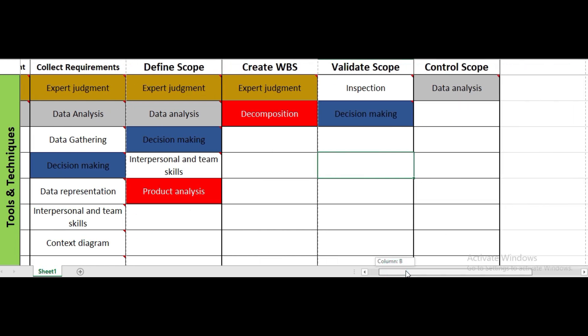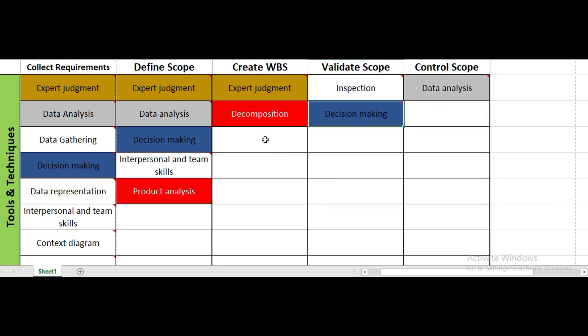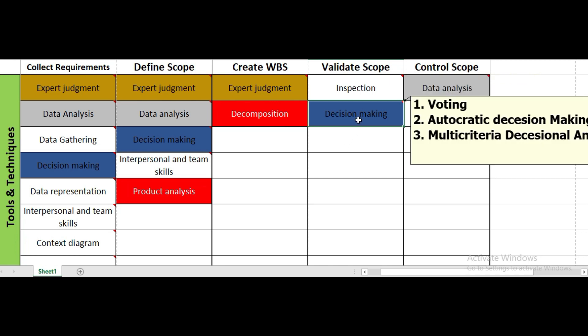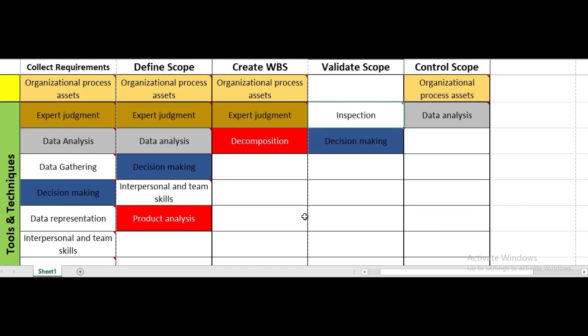For create WBS, the tools and techniques are expert judgment and decomposition. Decomposition involves breaking down project work into smaller, manageable components called work packages that are easily measurable with realistic estimates of cost and schedule. For validate scope, the tools are inspection — where we inspect deliverables from the execution process — and decision-making. For control scope, the only tool and technique is data analysis.